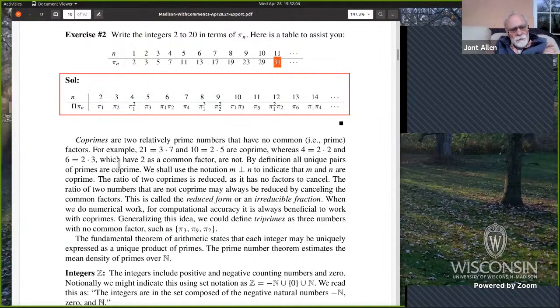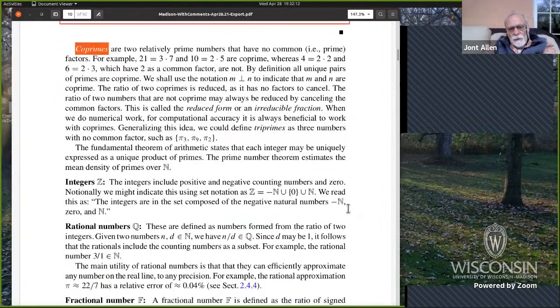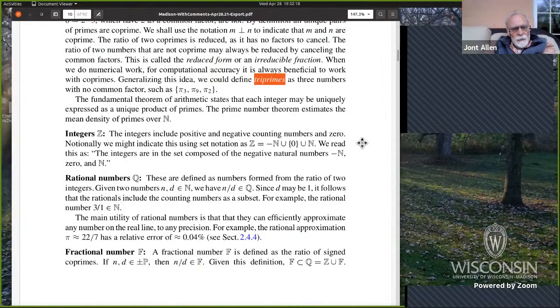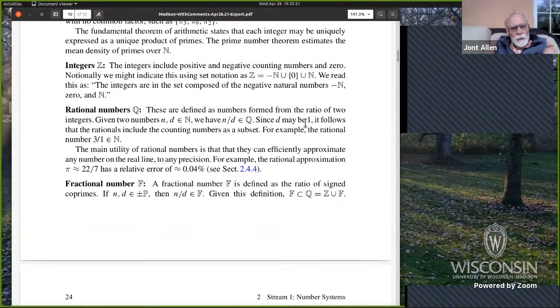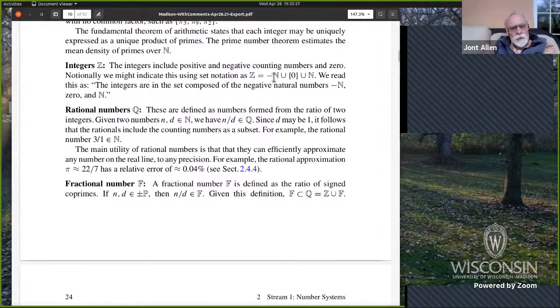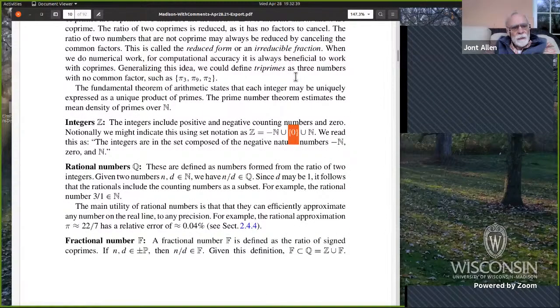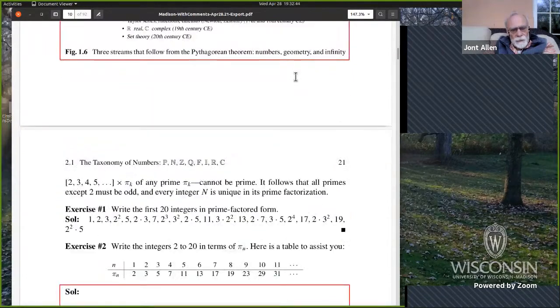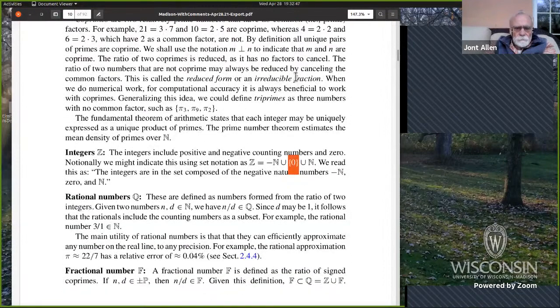Fundamental theorem of arithmetic. Now, there's a bunch of definitions here. But co-primes, you could think of generalizations of these ideas like tri-primes. And the integers are counting numbers with negative integers and zeros added.